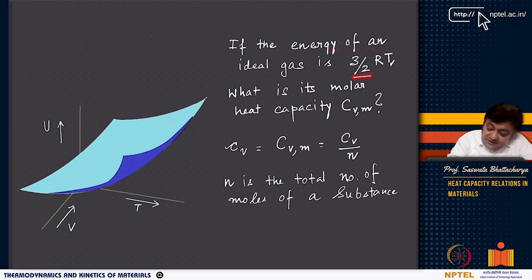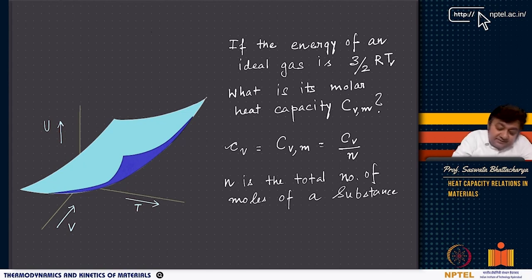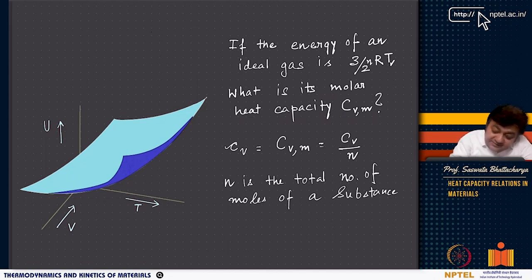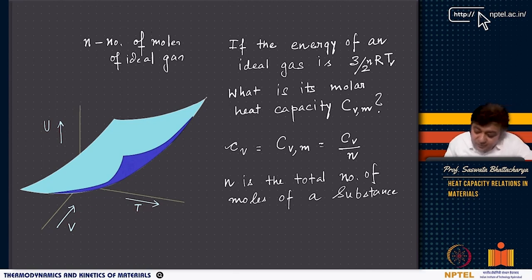The energy of an ideal gas is (3/2)RT per mole, or (3/2)NRT for N moles, where R has units of joules per mole Kelvin. There is something called molar heat capacity Cv,m, which is Cv divided by n, where n is the number of moles of a substance.